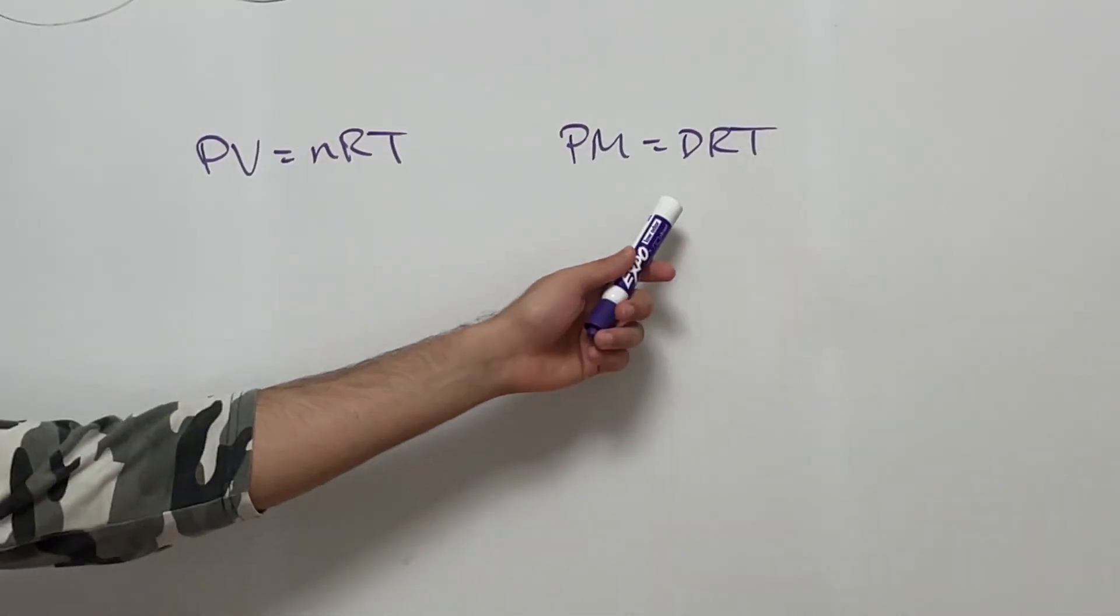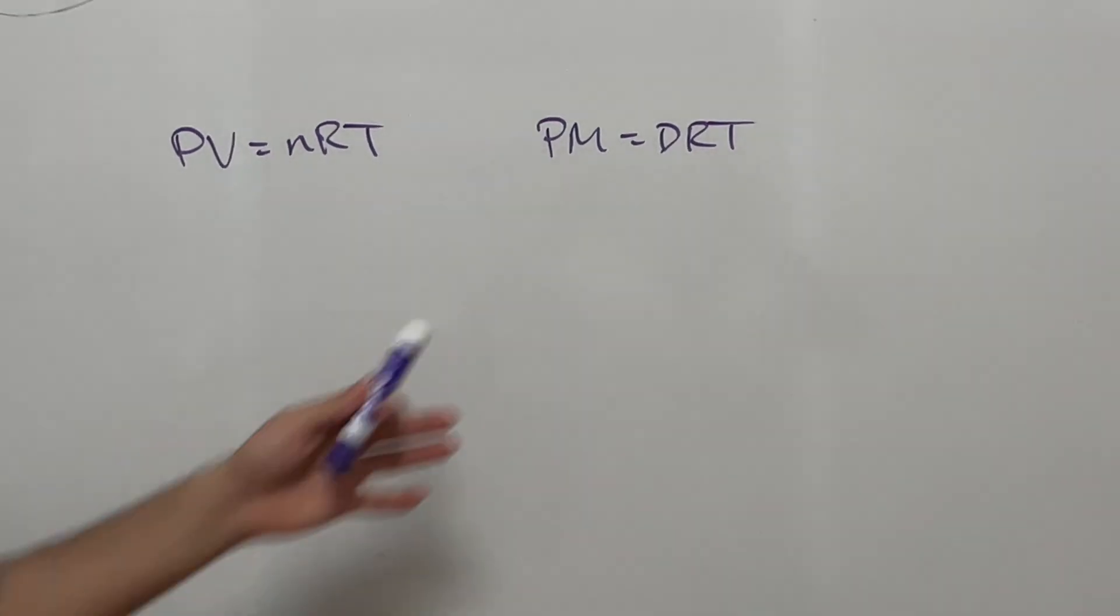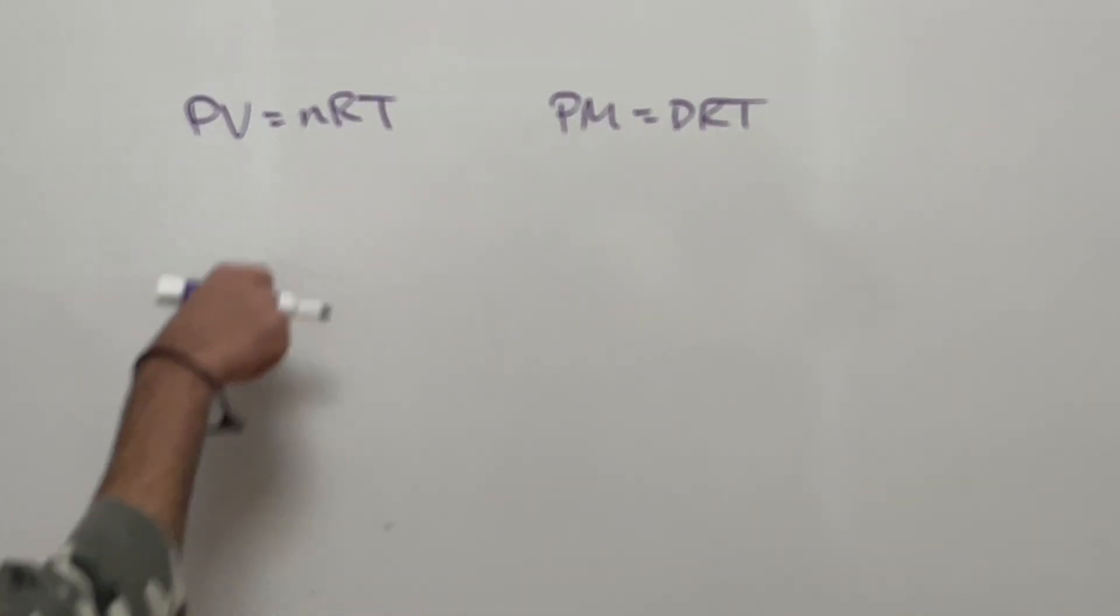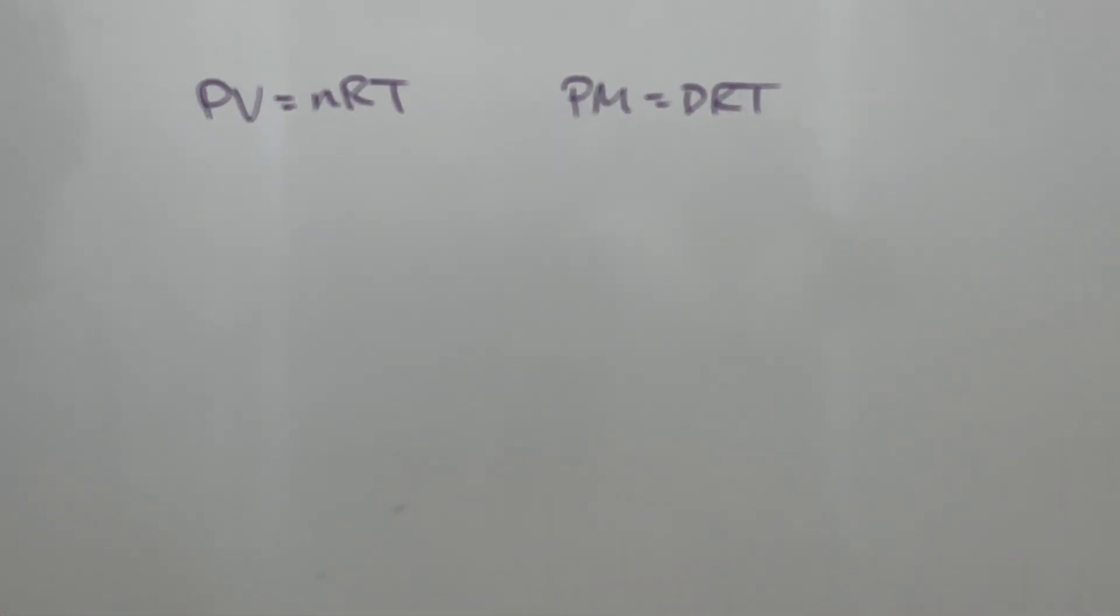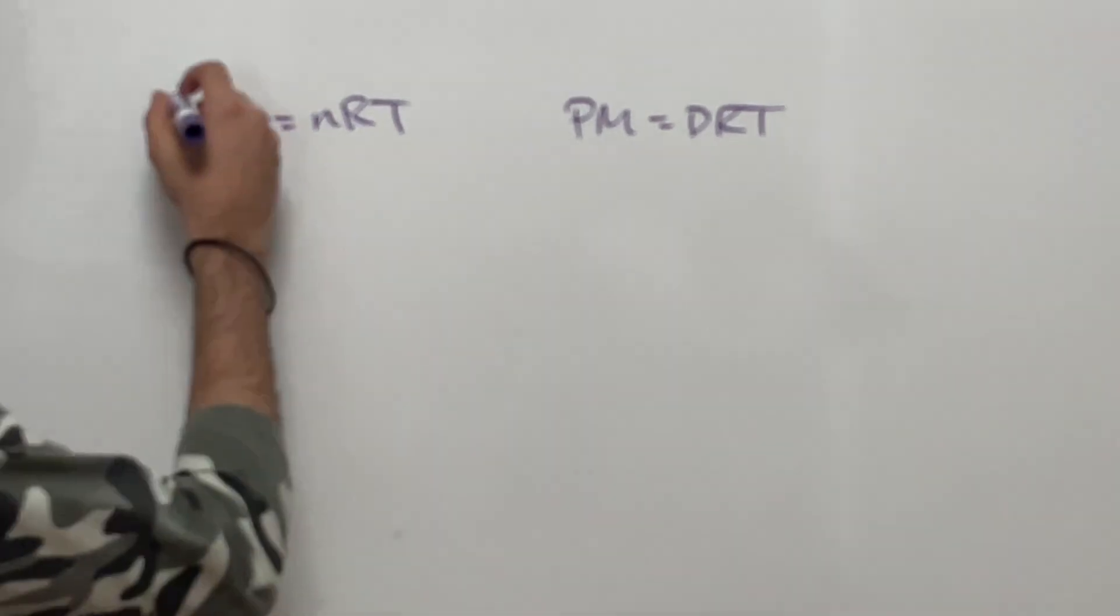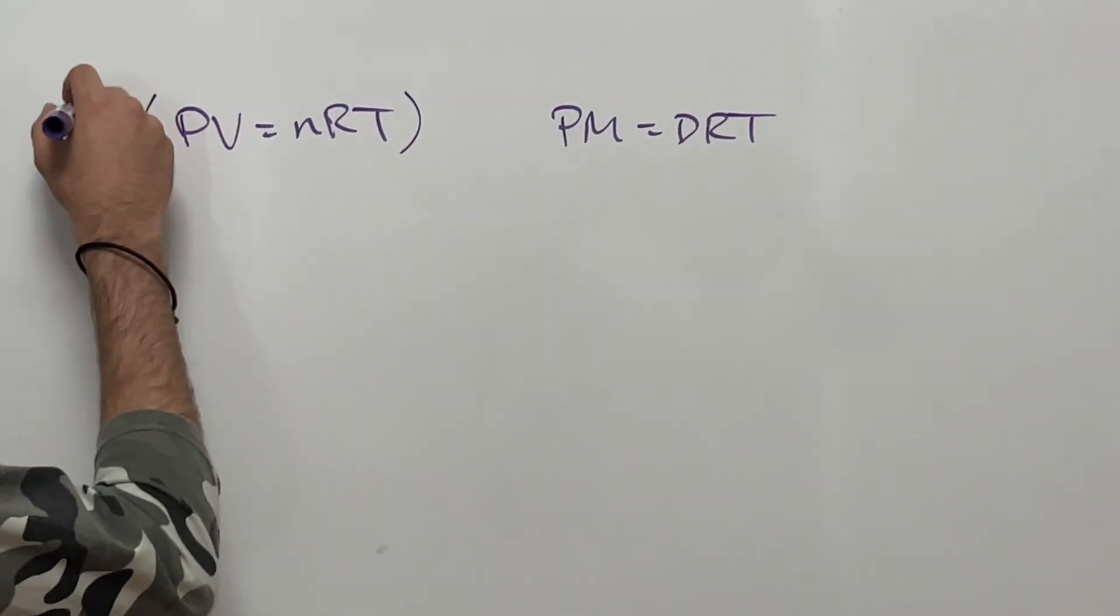You might not know this formula, so I'm going to show you how to derive this from the ideal gas law. The derivation is actually pretty simple. What we will do is we're going to take this equation and multiply both sides by molar mass divided by volume.